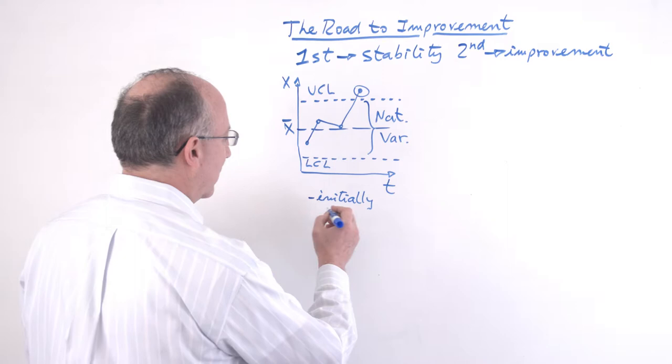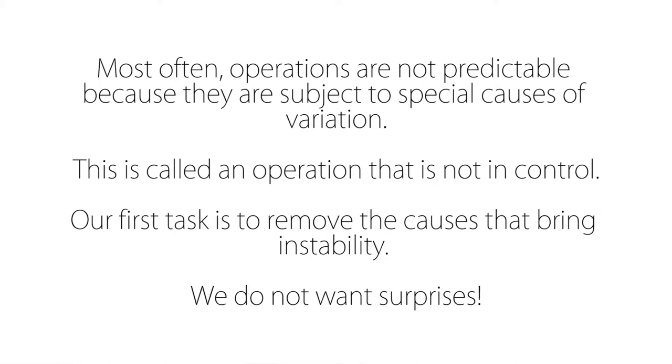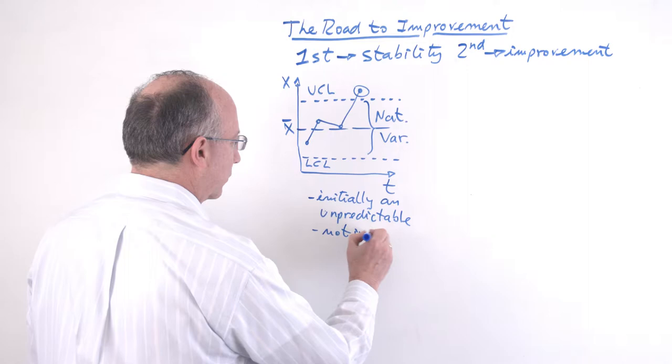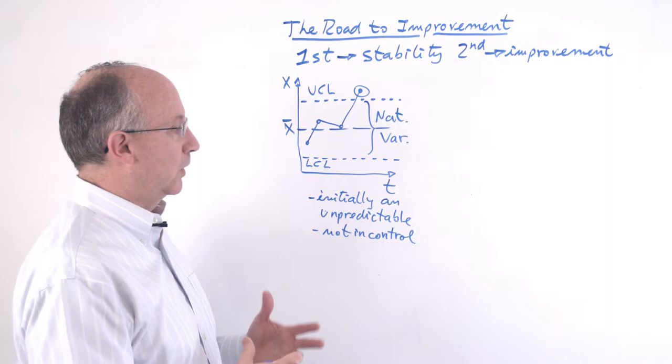So, initially, what you have is an unpredictable process. Another term for this is, we may say, is not in control. So, clearly this is not a situation that we want to be in. Because a process that is not in control, that is not predictable, cannot be improved.